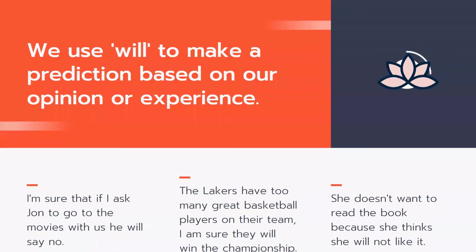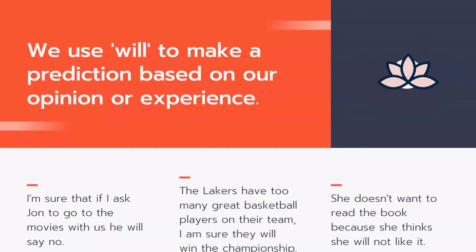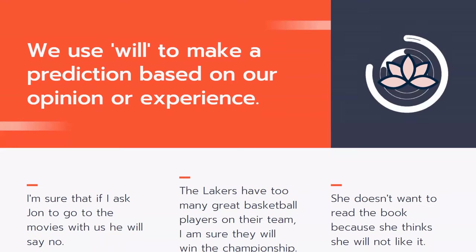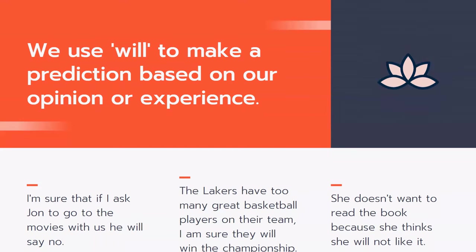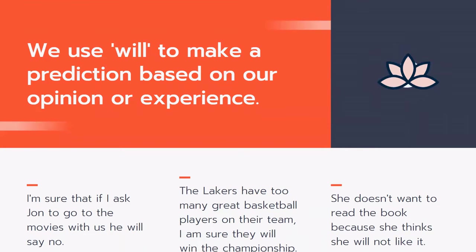First, we use will to make a prediction based on our opinion or experience. For example, 'I'm sure that if I ask John to go to the movies with us, he will say no.' I'm making a prediction that John will say no, and this prediction is based on my personal opinion or my experience with John — I know what kind of person he is, so I think he will say no.